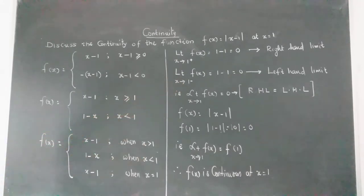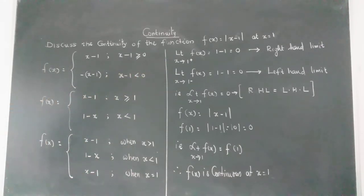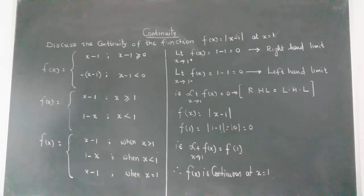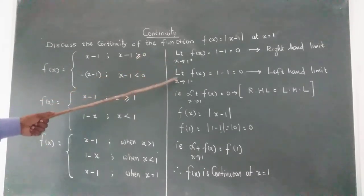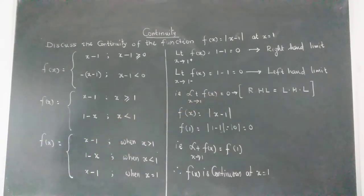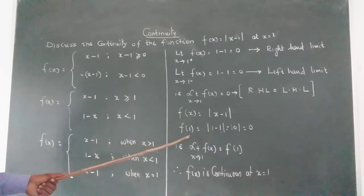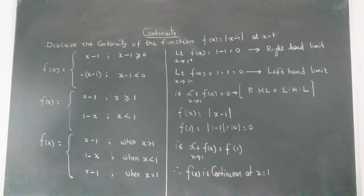Similarly, limit as x tends to 1⁻ gives the left hand limit of the function. Here we use f(x) = 1 − x, substitute x = 1: 1 − 1 = 0. The left hand limit becomes 0. So the limit as x tends to 1 of f(x) exists and equals 0, since left hand limit equals right hand limit. Now we find the value: f(1) = |1 − 1| = |0| = 0.